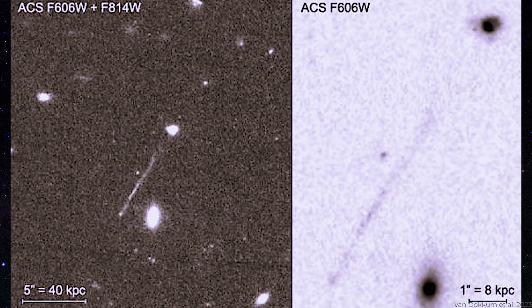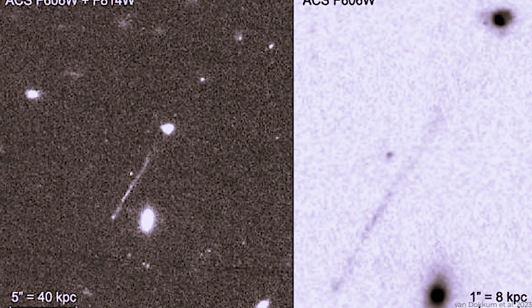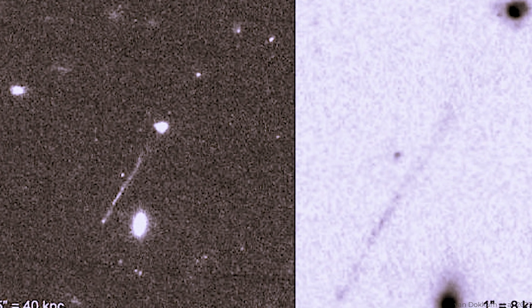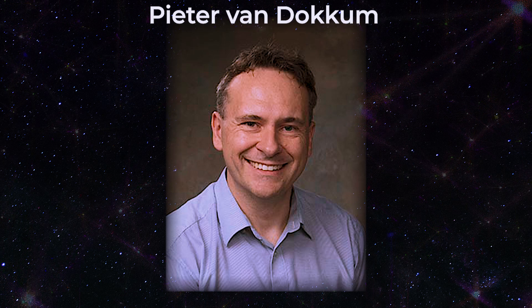Recently released Hubble Space Telescope photos reveal a thin stripe on one side of a tiny galaxy, which astronomer Pieter van Dokkum, a professor of physics and astronomy at Yale University, and his colleagues first identified.